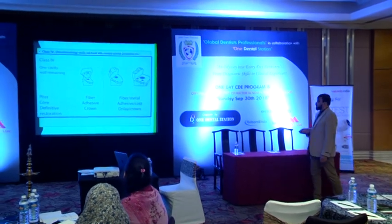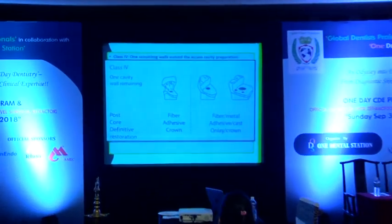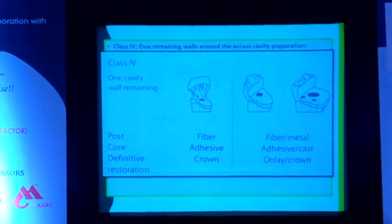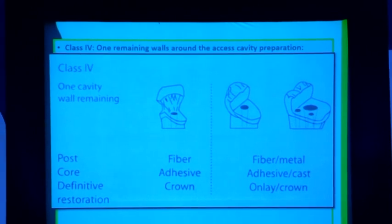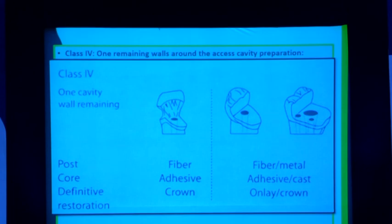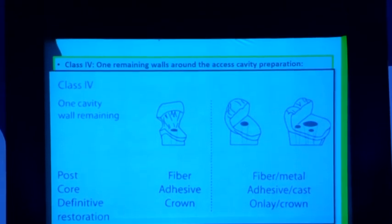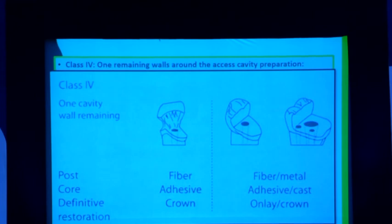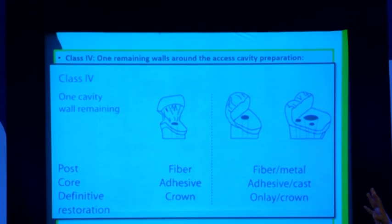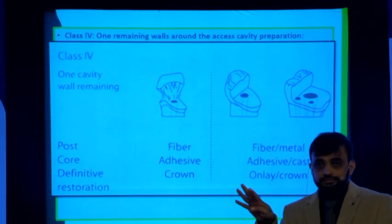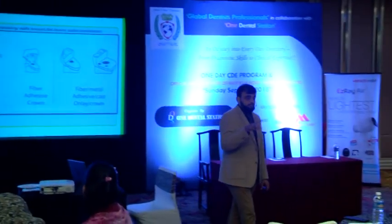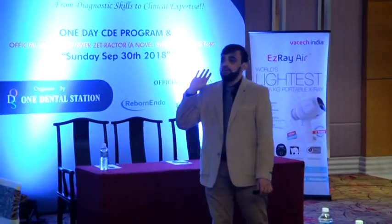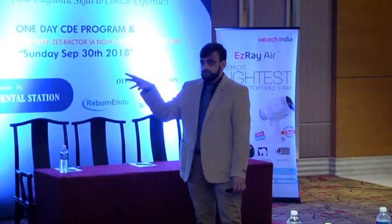If one wall is missing, do a fiber post or a metal post. Your inclination for a post will start from Class 4. Classes 1, 2, and 3 will only require a core and a crown. If it is an anterior tooth, it requires only a core. If it is a posterior tooth, then it requires a core and a crown.